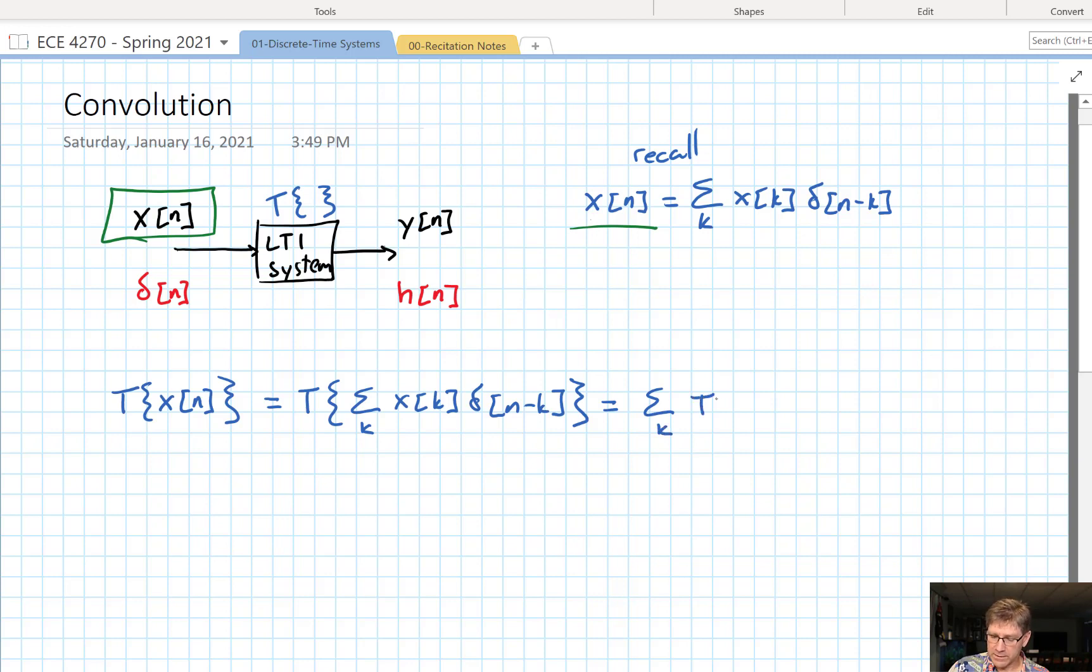Another way of visualizing this is a linear system will pass right through a sum. Okay, furthermore, our linear system is operating on functions of n. Well, look at this. x of k is no longer a function of n. It's just a scalar as far as the system is concerned. So, once again invoking linearity, that comes out.